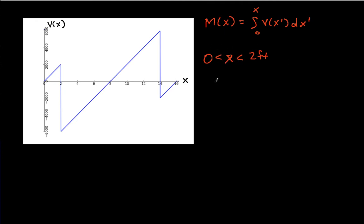then I have m of x is the integral from 0 to x of v of x prime, which is 1,000 pounds per foot times x prime dx prime. And when I work out this integral, I get that this is 500 pounds per foot times x squared.